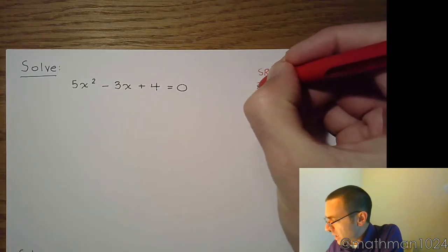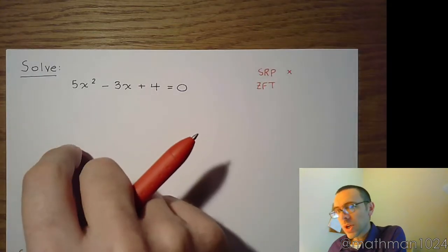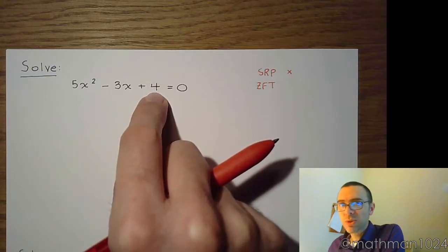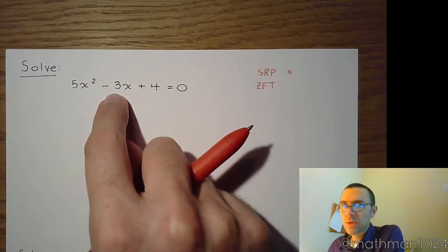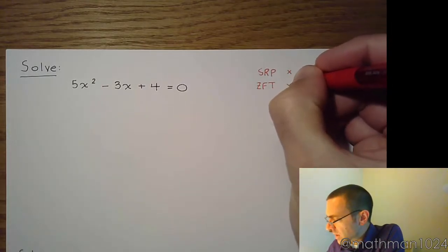The next thing you would try is to factor and use the zero factor theorem. If I do a quick check of this using the AC method, that's 5 times 4, which gives me 20. And can you find factors of 20 that add to 3? And you see that you can't. Now, there's no way to break down 20 so that you can get 3, so factoring is not good.